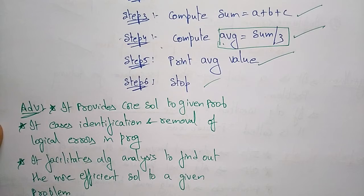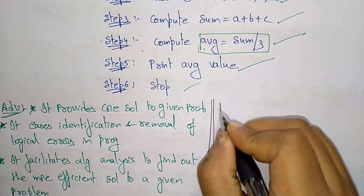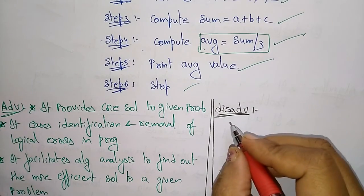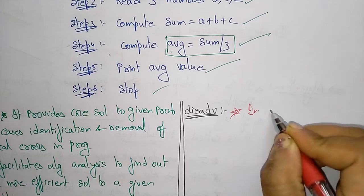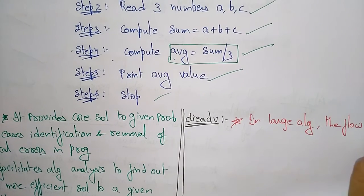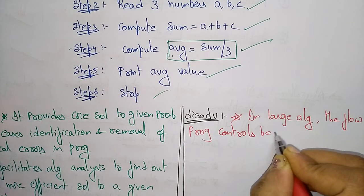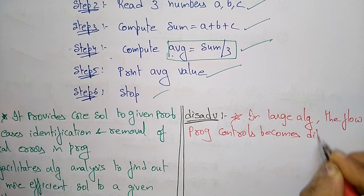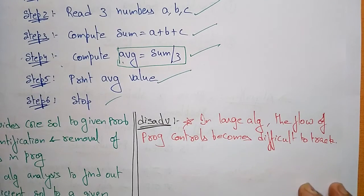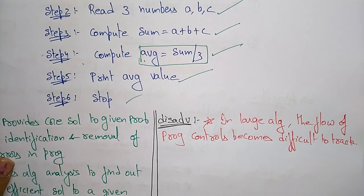Whenever there are advantages, there are obviously some disadvantages as well. The disadvantage of using algorithm is: for larger algorithms, the flow of program control becomes difficult to track. If you take the algorithm for larger problems, the flow of control becomes somewhat difficult to track — where the error occurred is somewhat difficult to identify.